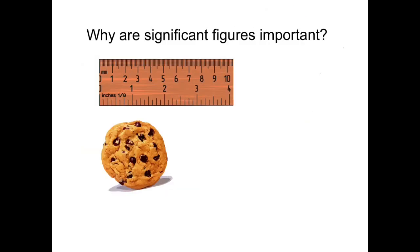Significant figures are also important in design. When an engineer sets a specification for a product to be manufactured, they want to give the precision necessary, but not overstate it. For example, let's say we're asked to make a hundred cookies that are two inches in diameter to fit in a two-inch wide plastic sleeve. I can make the cookies and, after they're baked, use this ruler to measure them. Some cookies might be two inches in diameter, others may be 2.1 or 1.9 inches, but all these would be considered good.